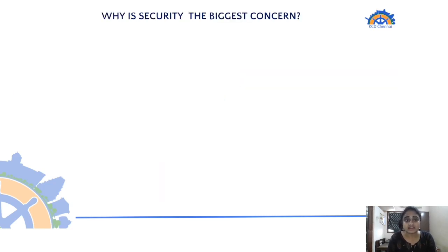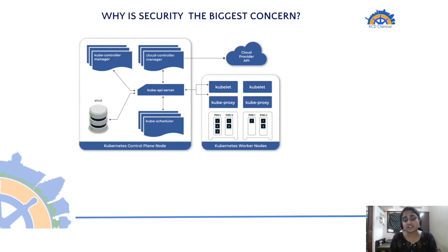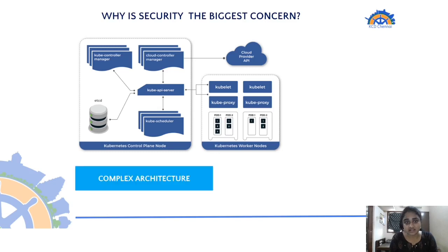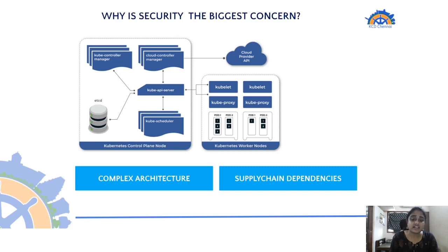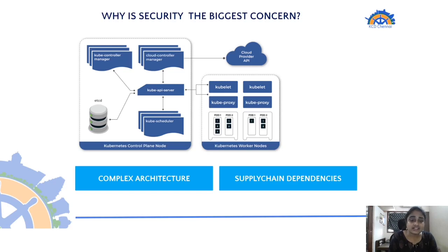Now let's talk about the cluster layer in Kubernetes architecture and why security is the biggest concern there. The Kubernetes architecture contains a control plane with components like API server, etcd, scheduler, and controller, while worker nodes run application workloads as pods with components like kubelet and kube-proxy. Security is a biggest concern because of the complex architecture — you have various components and need to maintain security of all of them.